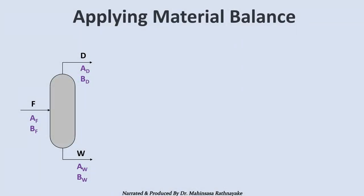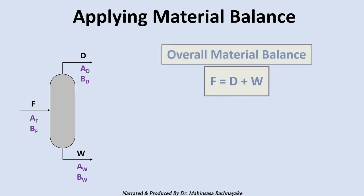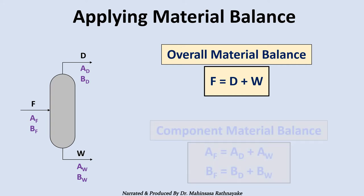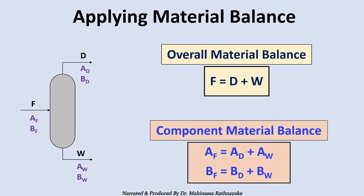When we apply the material balance equation, we can apply it in two ways. The first way is overall material balance, that means writing the balance equation for the total flow rates of the streams. The second way is writing the balance equation for the individual component flow rates.